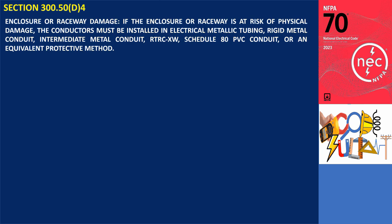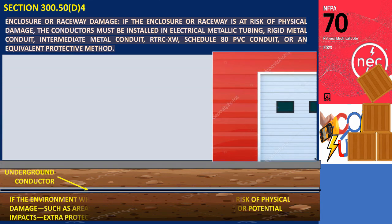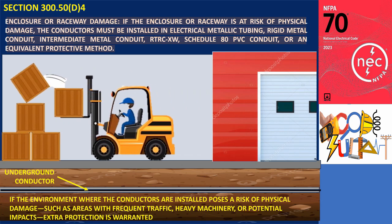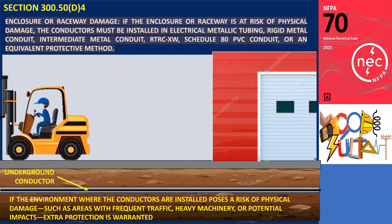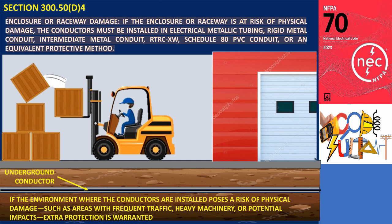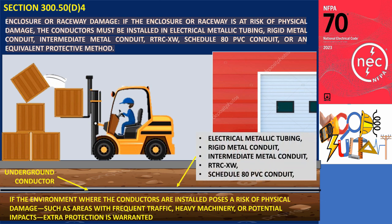Section 300.5(D.4), Enclosure or Raceway Damage: if the enclosure or raceway is at risk of physical damage, the conductors must be installed in electrical metallic tubing, rigid metal conduit, intermediate metal conduit, RTRC-XW, schedule 80 PVC conduit, or an equivalent protective method. If the environment where the conductors are installed poses a risk of physical damage — such as areas with frequent traffic, heavy machinery, or potential impacts — extra protection is warranted. Section 300.5(D.4) lists these acceptable protective methods: electrical metallic tubing, rigid metal conduit, intermediate metal conduit, RTRC-XW, schedule 80 PVC conduit, or an equivalent protective method.